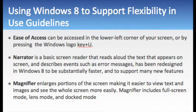There are three shortcuts many people prefer to use to activate Narrator. On the sign-in screen, press the Windows logo key plus U, or click the Ease of Access button in the lower left corner and then choose Narrator. On a keyboard, press the Windows logo key plus Enter. On a touch-only device, hold down the Windows logo button and press the Volume Up button.